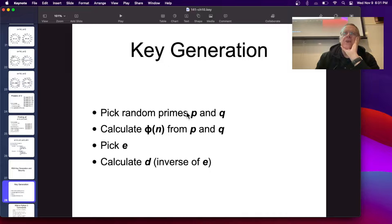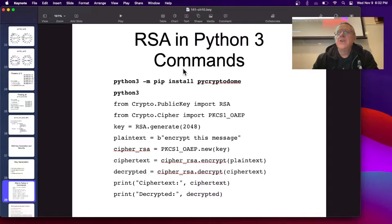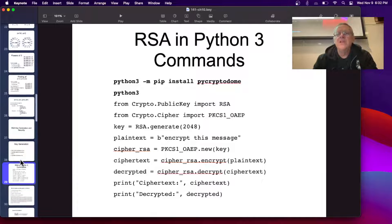To generate the key, you have to pick random primes, P and Q, then multiply them to get n, calculate phi, pick an E, which just has to be any number that's relatively prime, and typically just choose a prime number like 3 or 65537, and then D is the inverse of E, mod phi. So, you can do it with PyCryptoDome in Python, just import RSA, use RSA generate to generate the key, and then you can use cipher encrypt to encrypt, and cipher decrypt to decrypt. So, it's pretty easy to do.